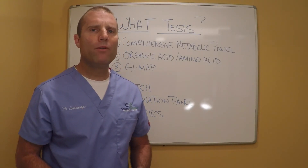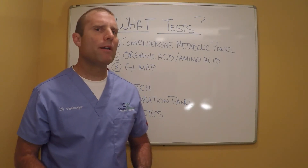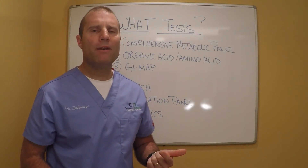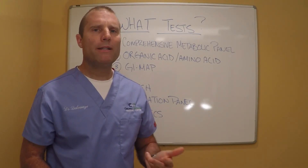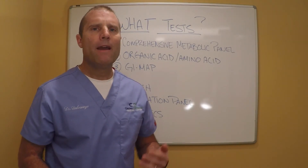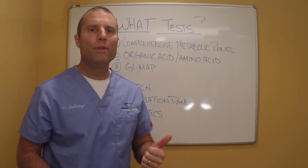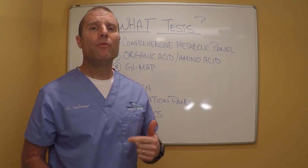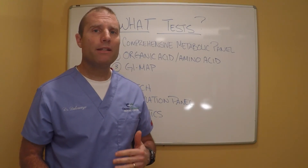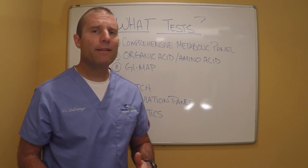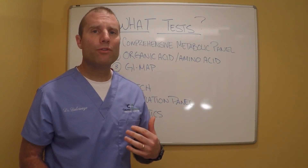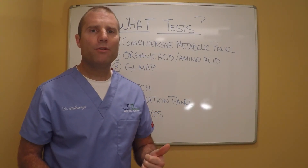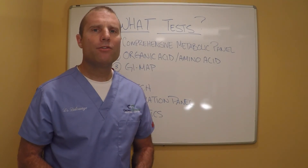So to recap, my top three go-to tests are: a comprehensive metabolic panel, an organic acid amino acid panel, and the GI Map — those are my top three for evaluating somebody. My next three go-to tests would be the Dutch panel from Precision Analytical, some type of immune testing if needed — antibody testing, leaky gut testing, gluten intolerance testing, food sensitivity testing, which would go to Cyrex Labs — and then finally a methylation panel followed by genetic testing.